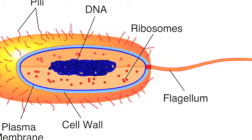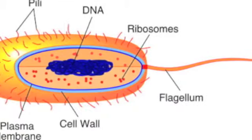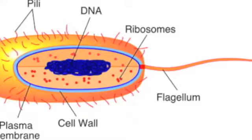Prokaryotic or small cells don't have a membrane around their nucleus. It doesn't have organelles. Bacteria.